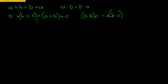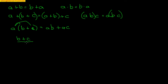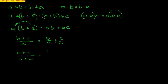We also have the distributive property: a times (b plus c) — you distribute the a to both, getting ab plus ac. It also works with division when you have a single term on the bottom: (b plus c) over a equals b over a plus c over a. But if there are two terms in the denominator, like (b plus c) over (a plus w), you can't split the bottom — it would have to be b over (a plus w) plus c over (a plus w), because you have to treat the entire denominator as one value.